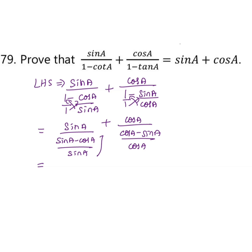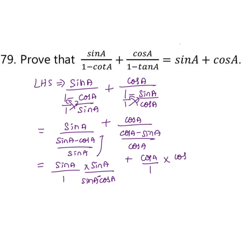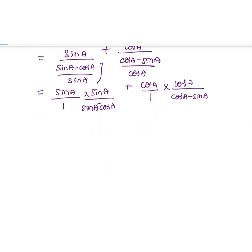Whenever a fraction is in the denominator, taking it up makes it reciprocal. So sin A divided by (sin A minus cos A)/sin A becomes sin A squared divided by (sin A minus cos A). Similarly, cos A divided by (cos A minus sin A)/cos A becomes cos A squared divided by (cos A minus sin A).